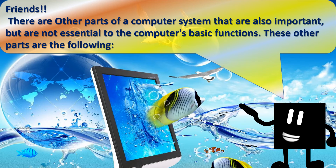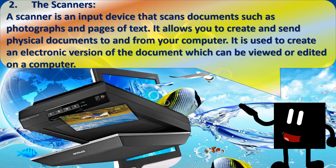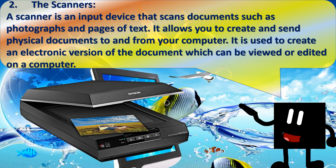There are other parts of the computer system that are also important but not essential to the computer's basic functions. 1. The printer: a printer is an output device that prints paper documents, including text documents, images, or a combination of both. The two most common types of printers are inkjet and laser printers. 2. The scanner: a scanner is an input device that scans documents such as photographs and pages of text. It allows you to create an electronic version of documents which can be viewed or edited on a computer.